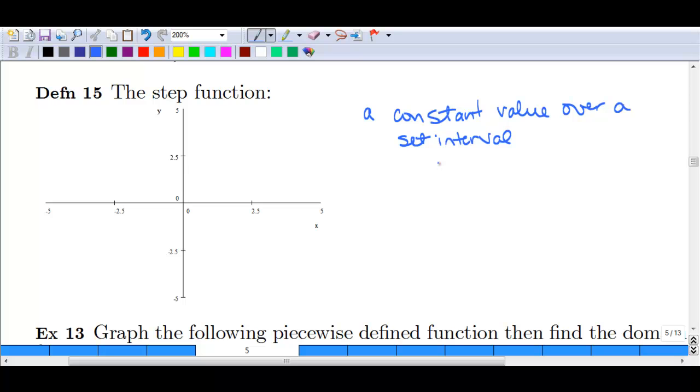So, for instance, we might have a step function that starts from 0 to 1 and it stays here. We would have an open dot there. And then at 1, it jumps up here. And then at 2, it jumps up to 2.